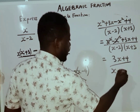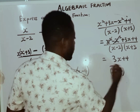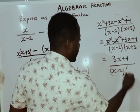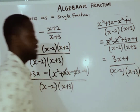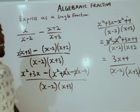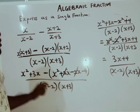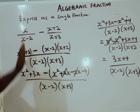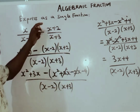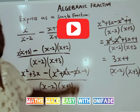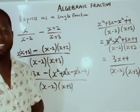So the final answer is (3x + 4) all over x(x minus 2)(x plus 3). This is my final answer. We have been able to express the given expression as a single fraction. Thanks for watching.